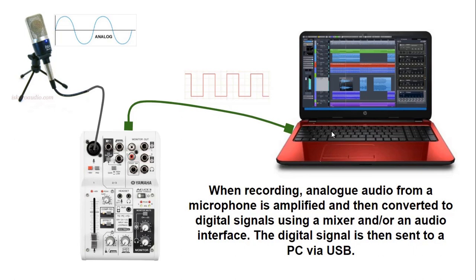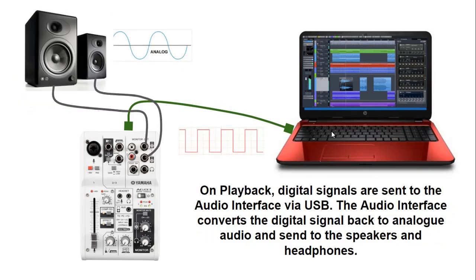This digital signal is recorded in your recording software or digital audio workstation for music production. And when we are playing back our audio on our computer, whether in a media player or our digital audio workstation, on playback the digital signals are sent to the audio interface again via the USB, and the audio interface or the USB mixer converts the digital signal back to analog audio, which is sent to the speakers and or the headphones.